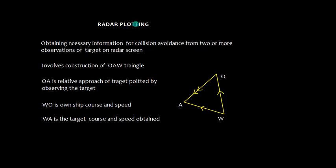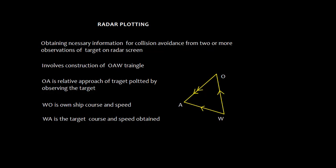Let's talk about radar plotting. Radar plotting involves obtaining necessary information for collision avoidance from two or more observations of a target on the radar screen. This radar plotting involves construction of the OAW triangle, where OA represents the relative approach of the target plotted by observing the target, WO is own ship's course and speed, and WA represents the target's course and speed.